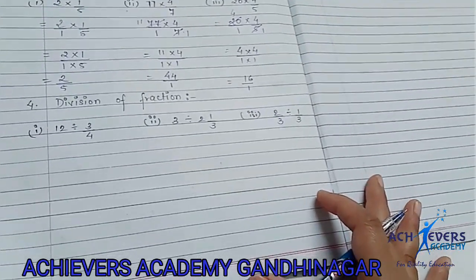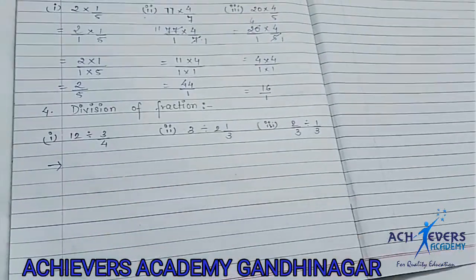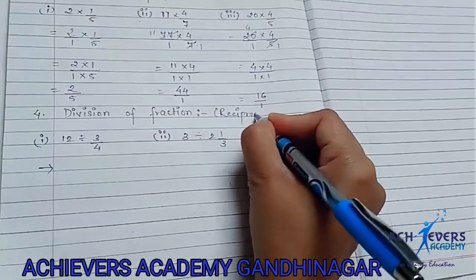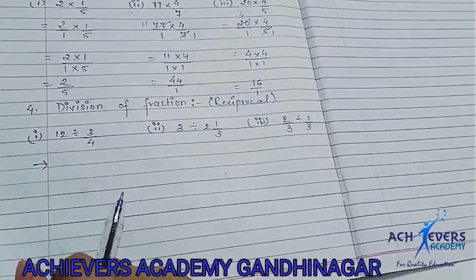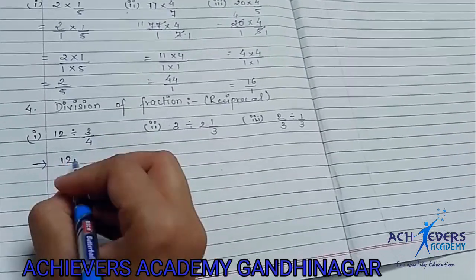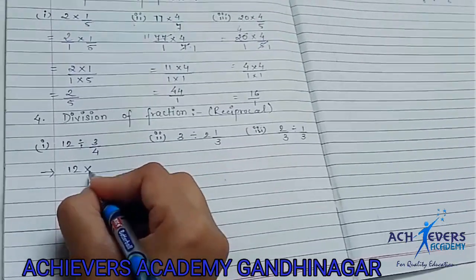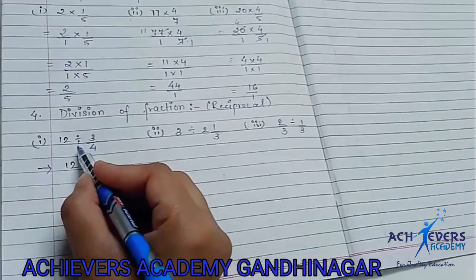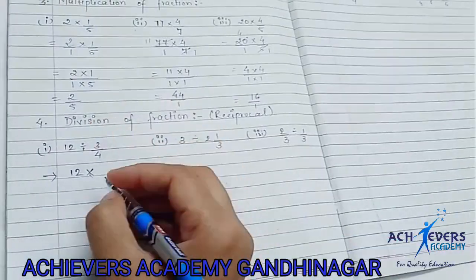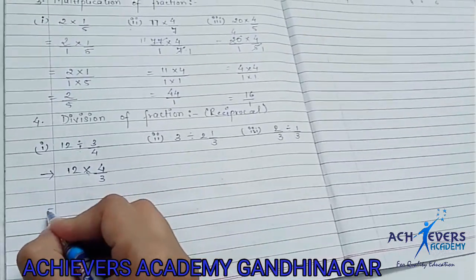Now let's go to division. What are we going to do in division? You can't do division of fractions directly. So we are going to use a term called reciprocal. What is reciprocal? Like here there is 12. There is a divide sign, but I don't have to divide — I will replace the divide symbol with multiply. But as I replace the divide symbol with multiply, our next fraction will flip. That means it will be reciprocal — it will become 4 by 3.